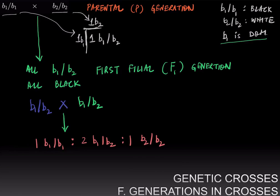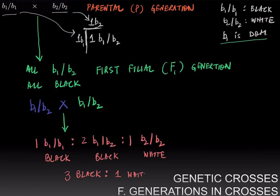The phenotypes are going to be black, black, black, and white — giving us a 3 black to 1 white phenotypic ratio. This is a monohybrid cross, and you usually get a 3 to 1 ratio in favor of the dominant allele.